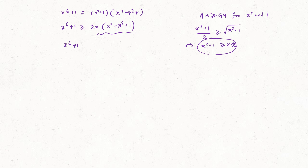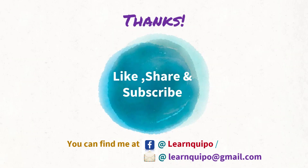So we can write x^6 + 1 ≥ 2a, and finally we can write x^6 ≥ 2a - 1. Hence this is proved. Thank you very much for watching this video. Please do like, share, and subscribe to my channel. You can find me on Facebook at learnkuipo. I will come with a new question in the next video — till then, take care.